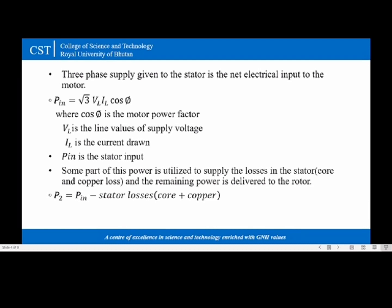So P2 is equal to Pin minus stator losses where stator losses is the sum of core and copper losses. P2 is the rotor input.